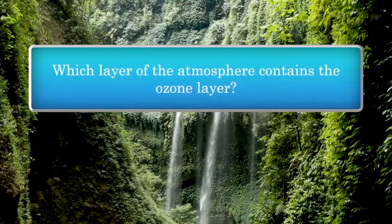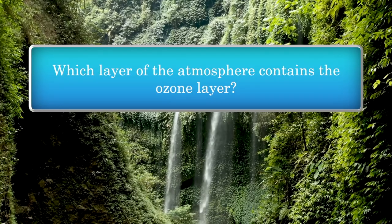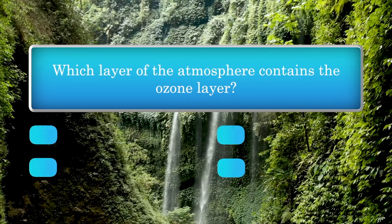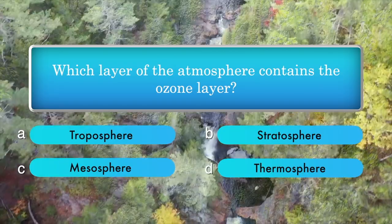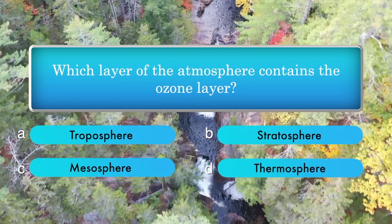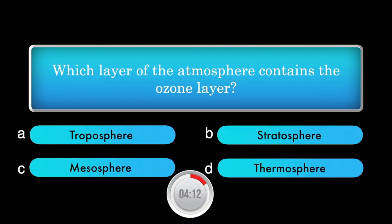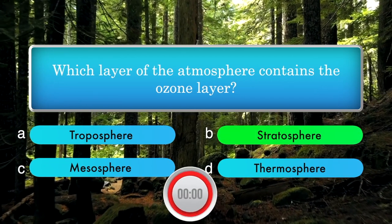Which layer of the atmosphere contains the ozone layer? Options: troposphere, stratosphere, mesosphere, thermosphere. Answer is stratosphere.